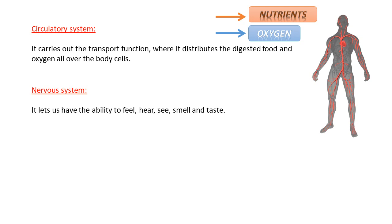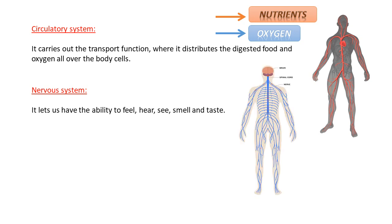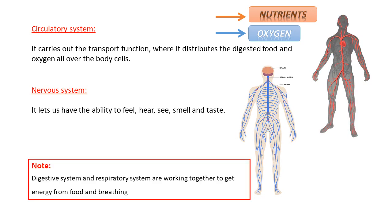The nervous system lets us have the ability to feel, hear, see, smell and taste. Remember, the digestive system and respiratory system are working together to get energy from food and breathing.